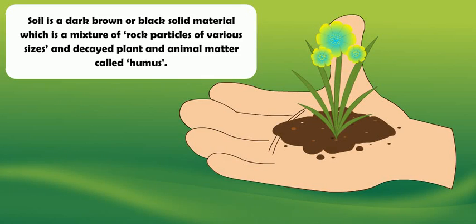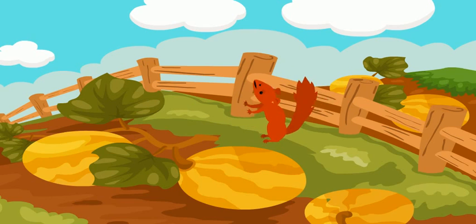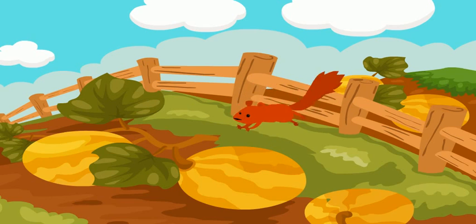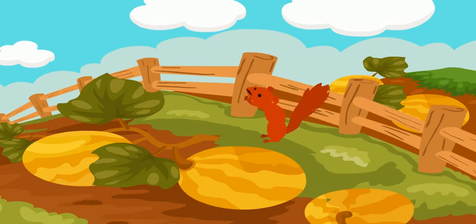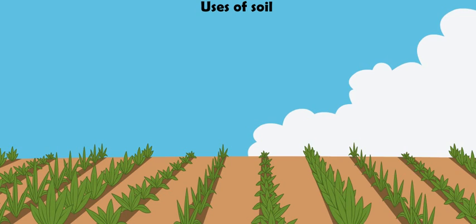Soil is a solid material which is a mixture of rock particles of various sizes and decayed plant and animal matter called humus. Soil is essential for the existence of life on the earth. Soil is essential for agriculture.